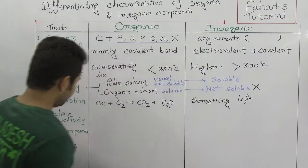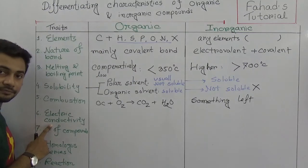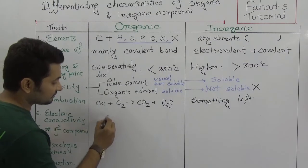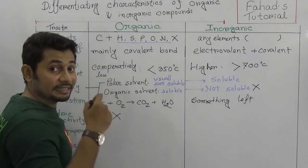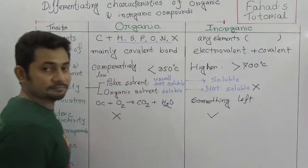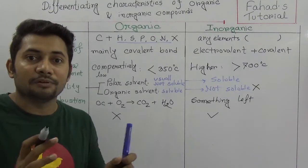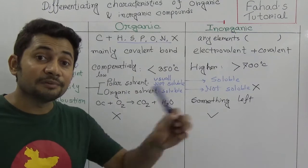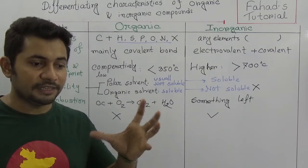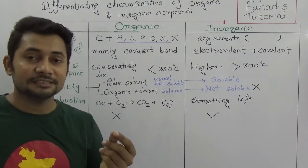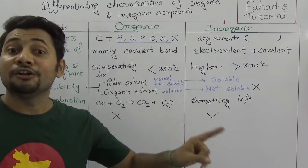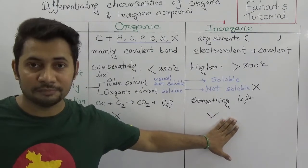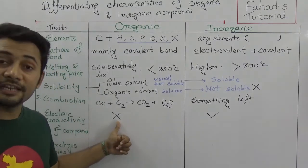In case of electric conductivity, pure organic compounds are not electrically conductive. But inorganic compounds — like ionic compounds or electrolyte compounds — are electrically conductive because they have ionic bonds made up of cations and anions. Ionic compounds in the liquid state can act as electric conductors. So for inorganic ionic compounds electric conductivity is present, but in organic compounds there is no electric conductivity.